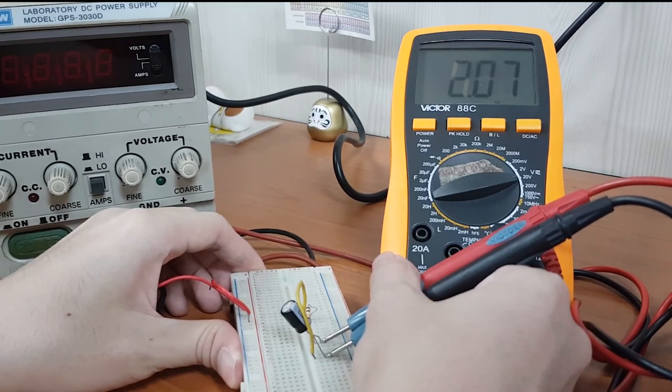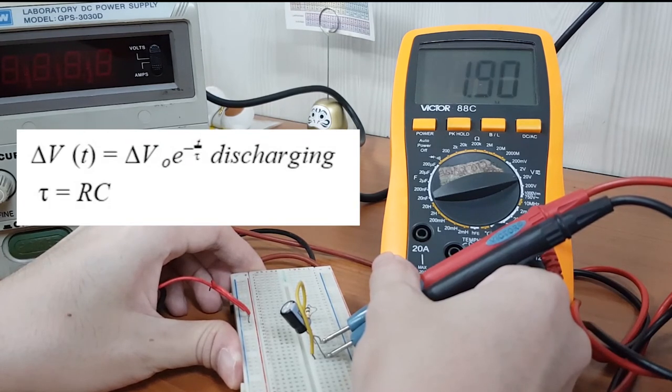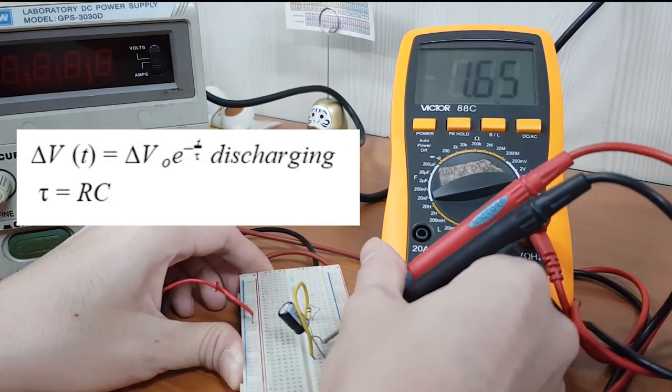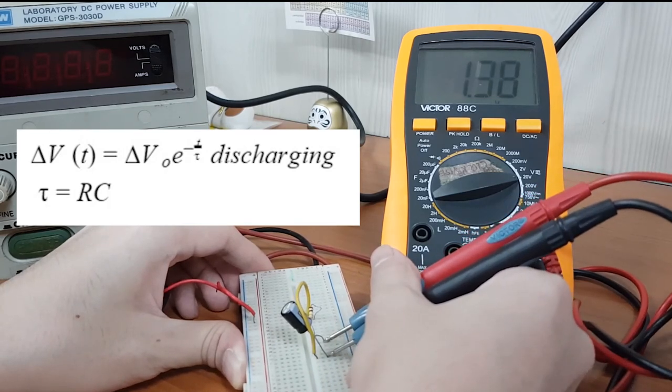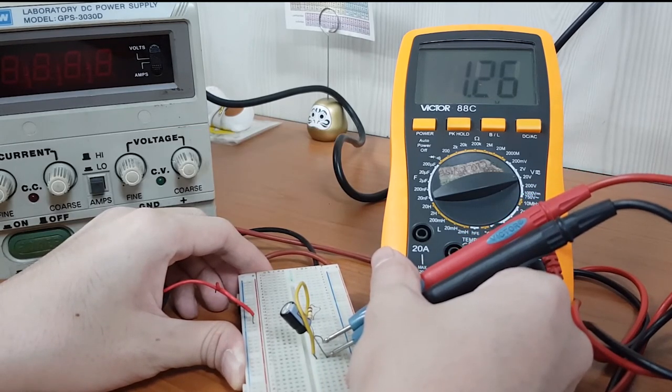While this stopwatch is running, observe the decrease in the voltage reading across the capacitor. Then record the voltage across the capacitor, let's say, every 5 seconds also.